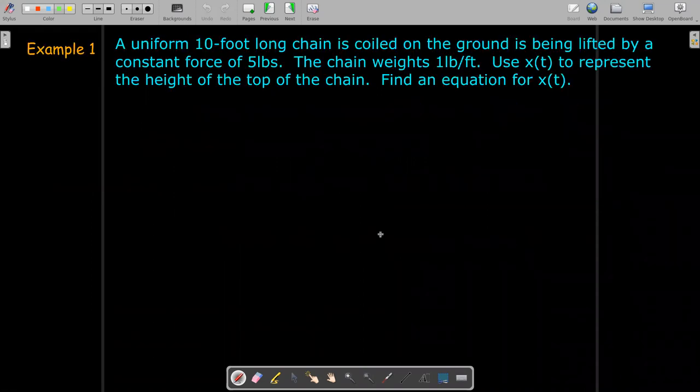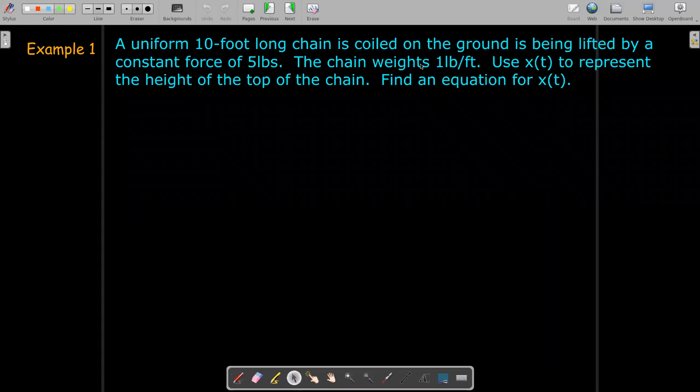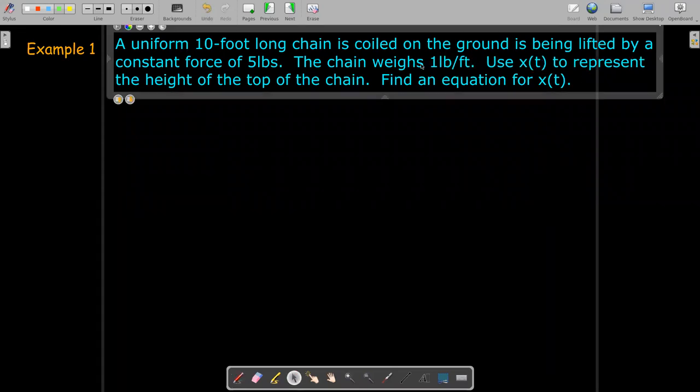Well let's take a look at an example. We've got a 10-foot long chain that's coiled on the ground and is being lifted upward by a constant force of 5 pounds. The chain weighs 1 pound per foot. We're going to use x(t) to represent the height of the top of the chain and we'd like to find an equation for x(t).